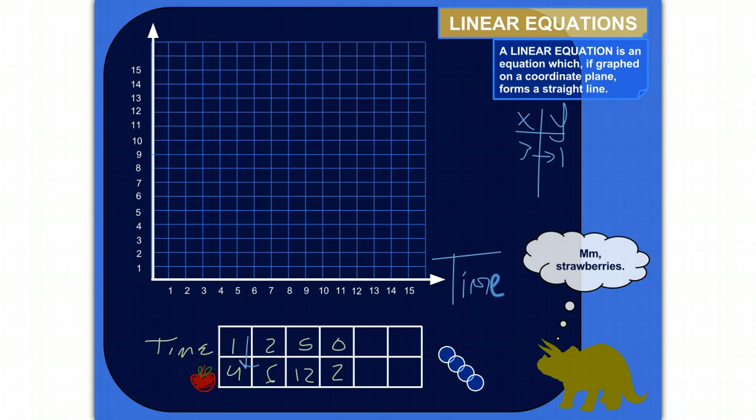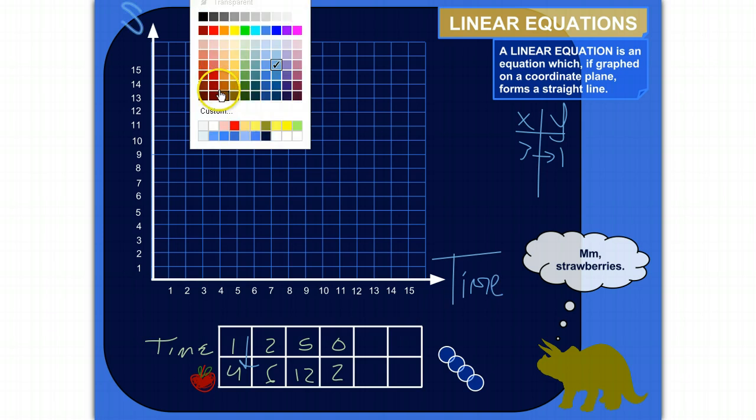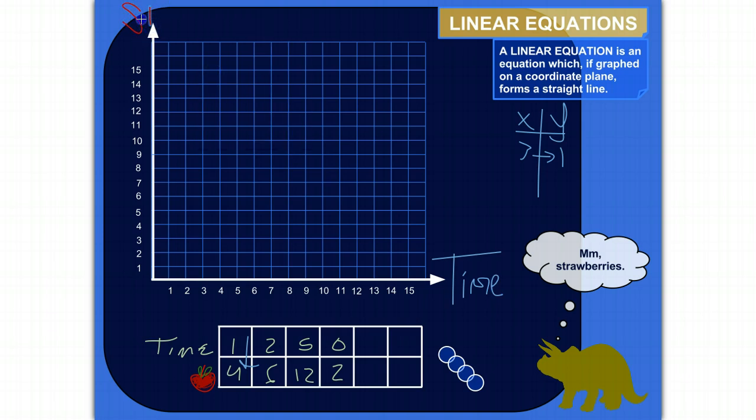And then we'll plot strawberries over here. Let's make that red. Strawberries. This is going to be kind of sloppy, and I apologize. Just need to plot time versus strawberries.